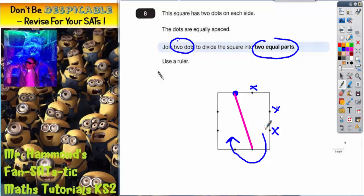So those two dots, if you join those two, it will be correct. And you can tell that it's equal because you've got three dots between them on this side and three dots between them on that side, so we've got two equal parts.